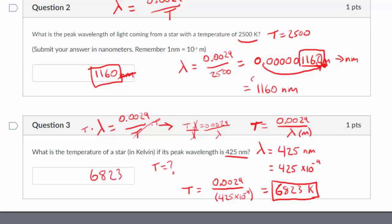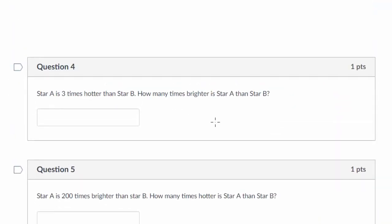Okay, let's take a look at the next two questions. Question four. Star A is three times hotter than star B. How many times brighter is star A than star B? So now we're dealing with temperature and brightness. So we need a new equation here. E, which is our brightness, the intrinsic brightness of a star, is equal to sigma times T to the fourth.